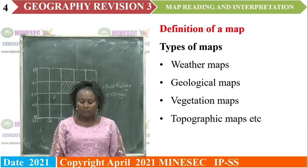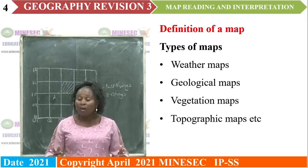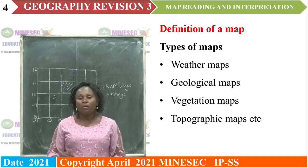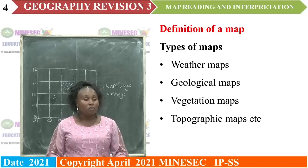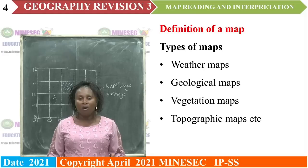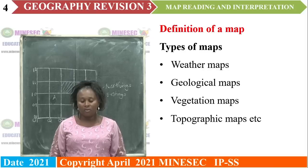What is a map? A map is a representation of all of the Earth's surface or portions of it on a plain surface. It can be on a piece of paper, a table or a cardboard paper. There are so many different types of maps. We have a weather map that shows weather conditions, geologic maps which show rock types or the geology of an area, vegetation maps which show the vegetation of an area, and topographic maps.